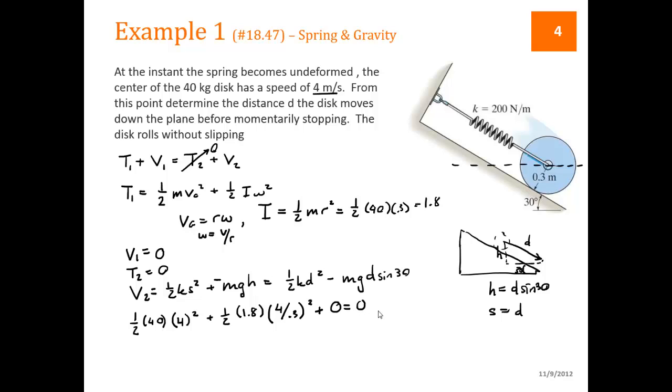Is equal to T2 is 0, plus 1/2 k is 200 d squared, minus 40 times 9.81 d sine of 30. The only unknown in this expression is d. So it's a quadratic equation in d, which we can crunch all the numbers. We'll get -100 d squared plus 196.2 d plus 480 is equal to 0.